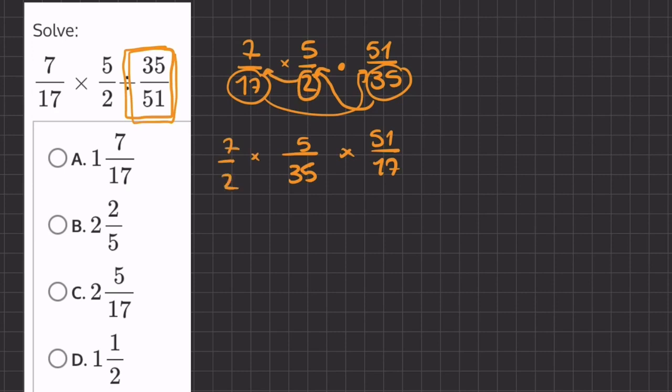Now let's simplify our fractions a little bit. We can simplify this 5 over 35, let's first of all rewrite this, we have 7 over 2.